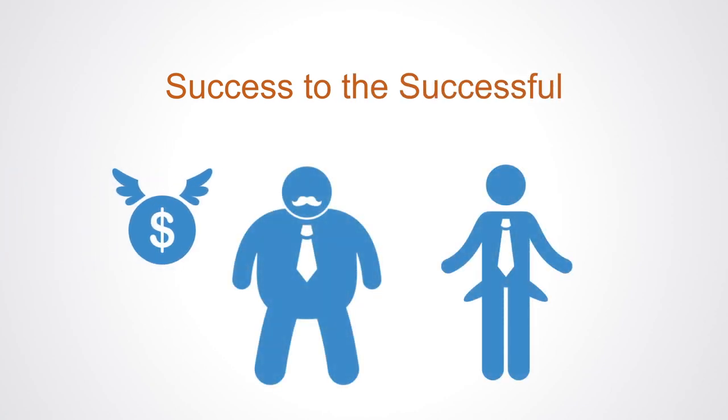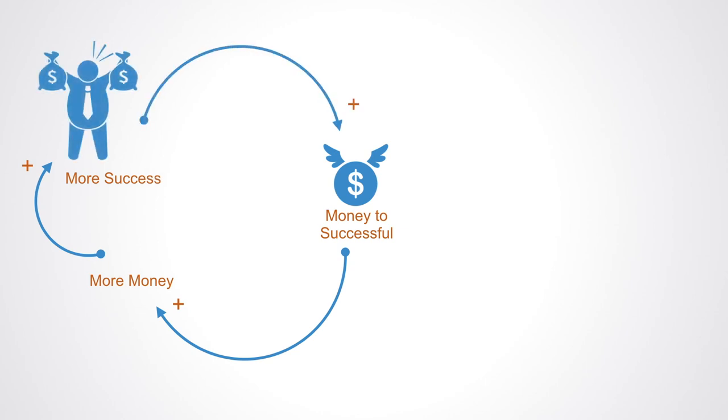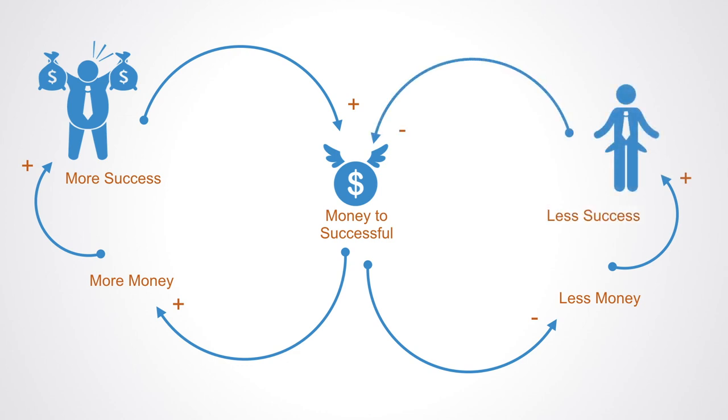This describes a dynamic where two people or activities require the same limited resources. As one of them becomes more successful, more resources are assigned to them. However, now the second one becomes less and less successful due to lacking resources. This proves the right decision to support the first one.